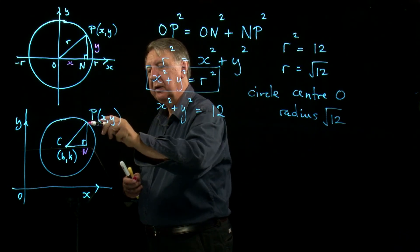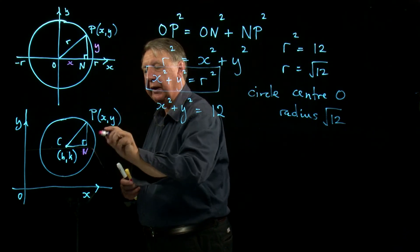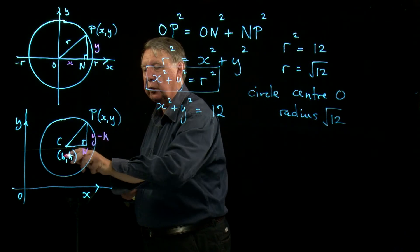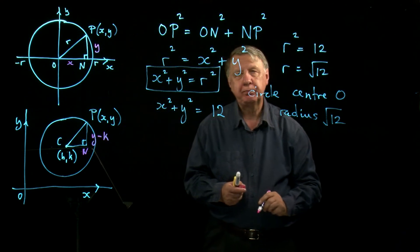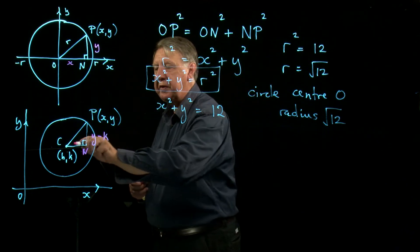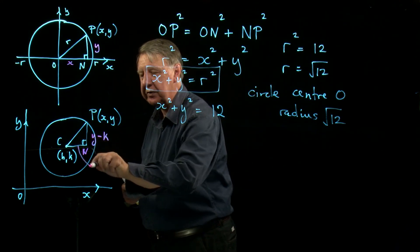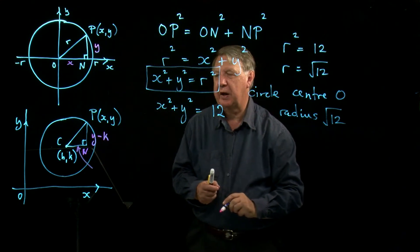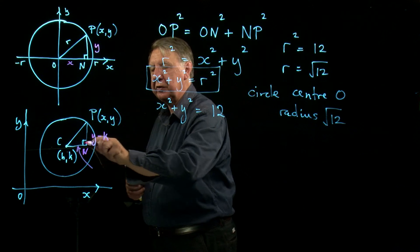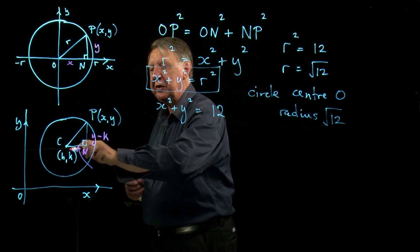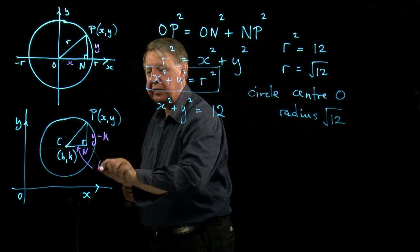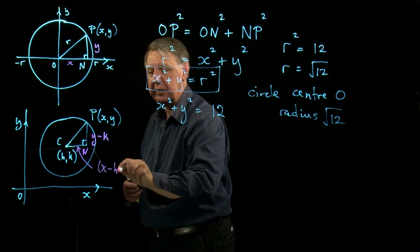So PN this time is the difference in the Y coordinates, so it's Y take away K, where I'm calling the center of the circle the point HK. And CN is the horizontal distance along here, which is X moves from H to X, so the distance is X minus H.